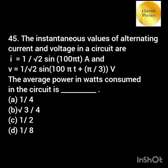The instantaneous values of alternating current and voltage in a circuit are given. The average power in watts consumed in the circuit is?